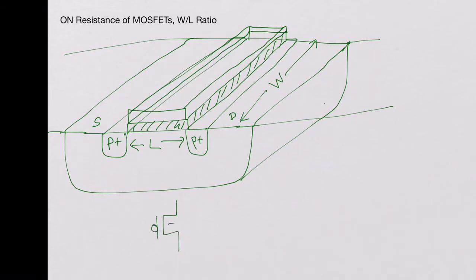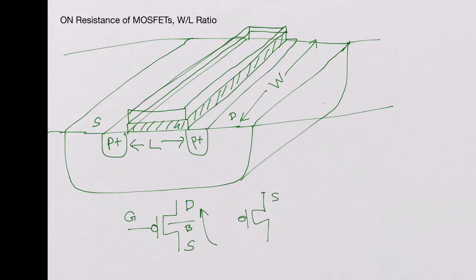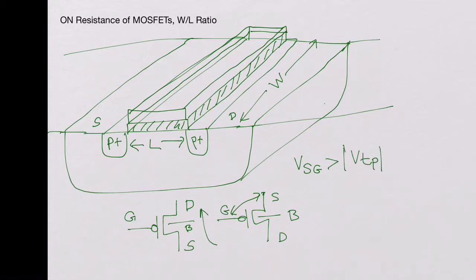Looking at the symbol for the pMOS device, the source is at a higher potential, schematically represented on the top side, and the drain is at a lower potential. This is the bulk, and the gate is at a lower potential than the source. Once V_SG is greater than the absolute value of V_tp, the pMOS is on. But 'on' doesn't mean a complete short — there is a resistance between source and drain, called R_on or on-resistance.